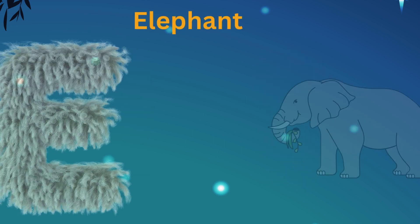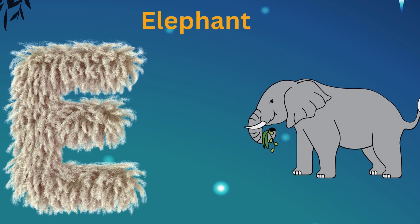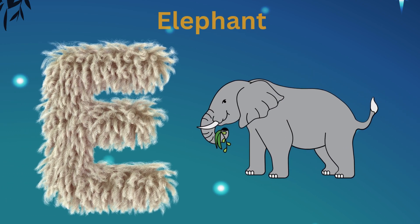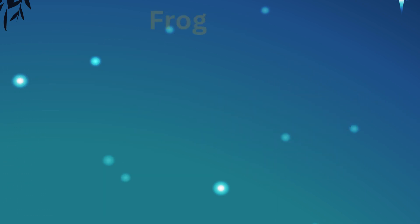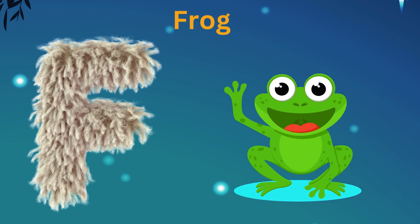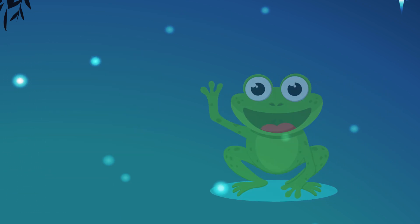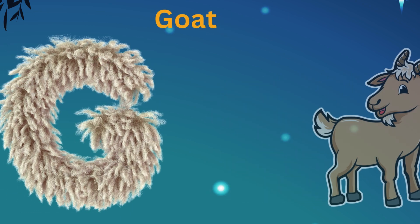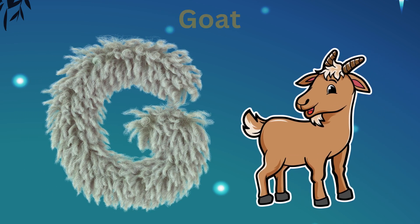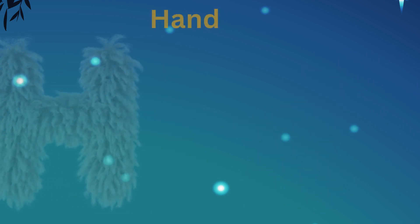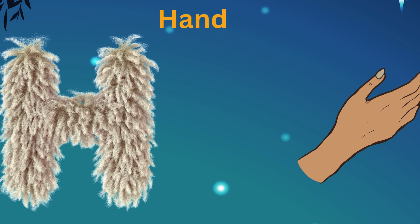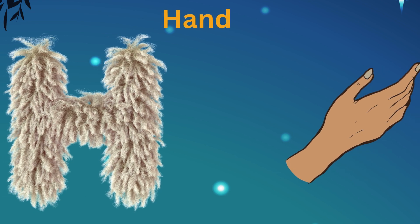E is for Elephant, E-E-Elephant. F is for Fish, F-F-Fish. G is for Godzilla, G-G-Godzilla. H is for Horse, H-H-H-Horse.